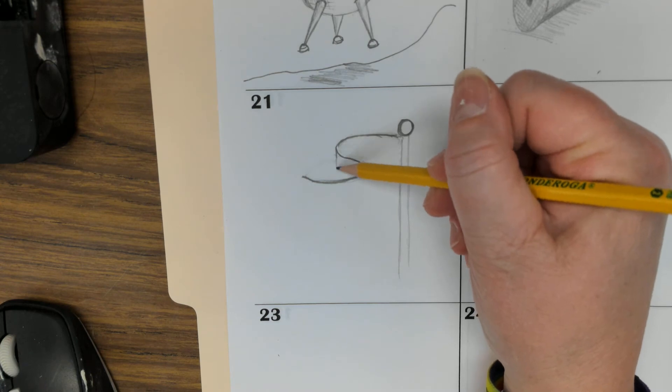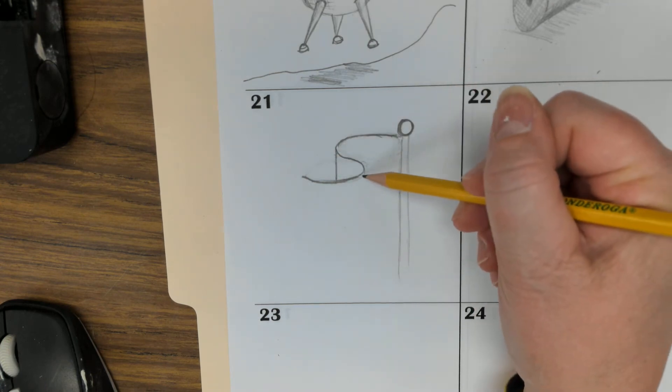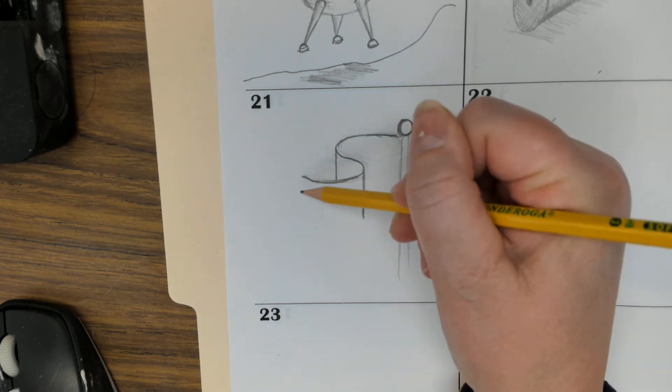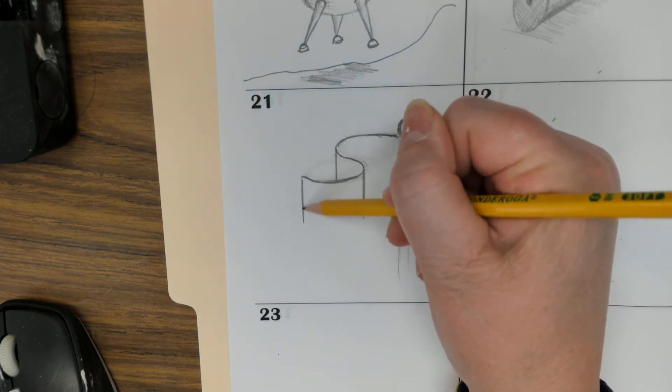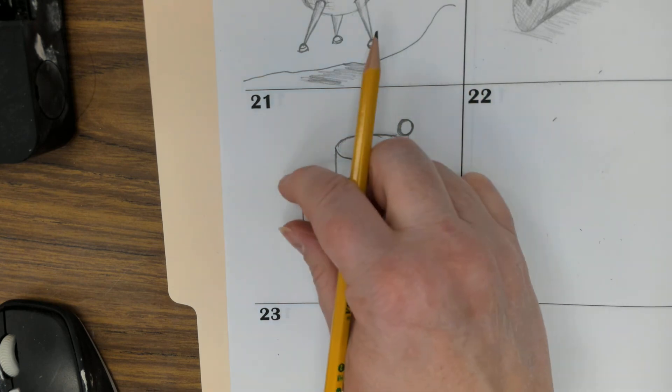From this line, we're going to pull a straight line down. From here, we're pulling a straight line down. Straight line down. These two will be like the same length.